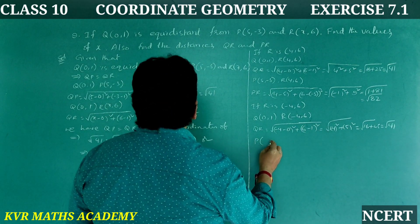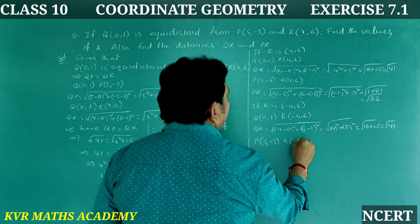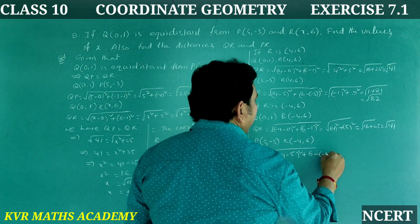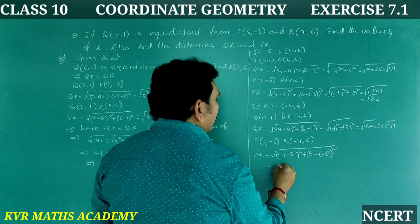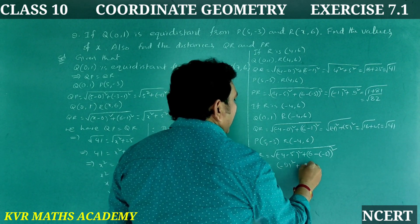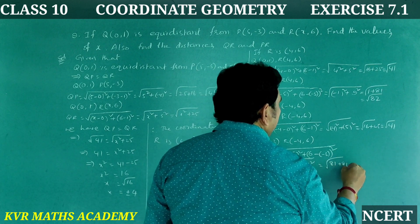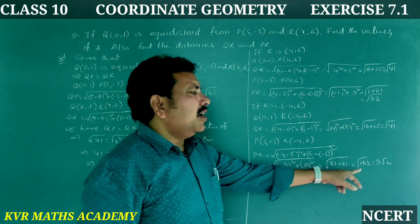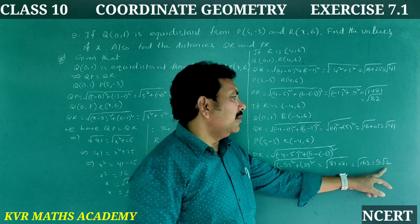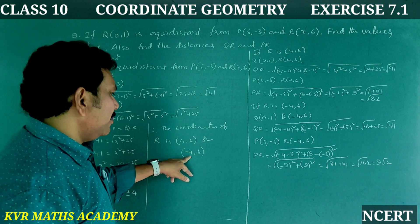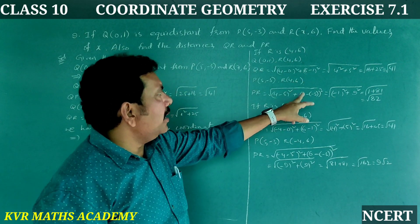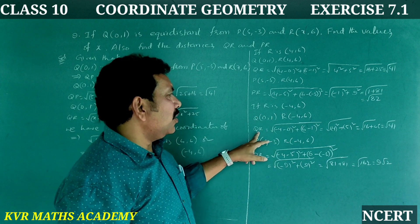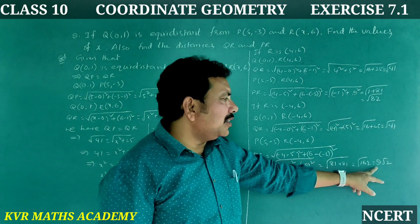Now let us find PR when R is (−4, 6). P is (5,−3) and R is (−4, 6). PR = √[(−4−5)² + (6−(−3))²] = √[(−9)² + 9²] = √[81 + 81] = √162 = 9√2. So: for R(4,6), QR = √41 and PR = √82; for R(−4,6), QR = √41 and PR = 9√2.